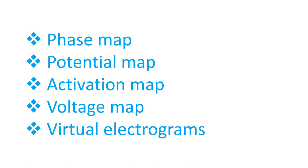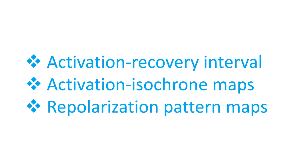The workstation provides various types of maps including phase map, composite map, potential map, activation map, propagation map, voltage map, slew rate map, as well as virtual electrograms. ECGI constructs electrograms over the entire epicardial surface of the heart with high resolution.